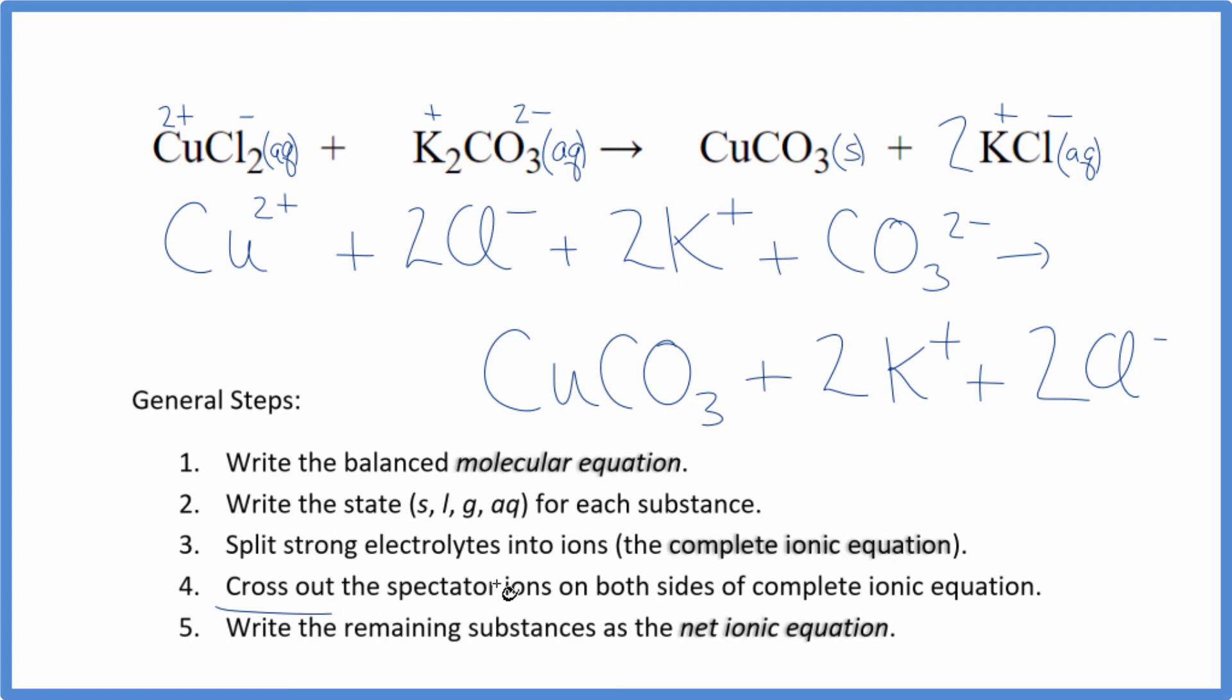Now we'll cross out those spectator ions on both sides. So as I look here in the reactants, here's the 2 chloride ions in the products, 2 chloride ions. I have 2 potassium ions here in the reactants and in the products. Cross those out. What's left, this is the net ionic equation for CuCl2 plus K2CO3.